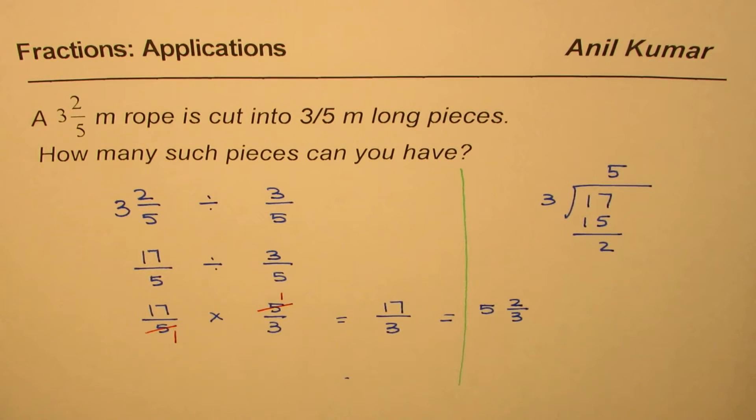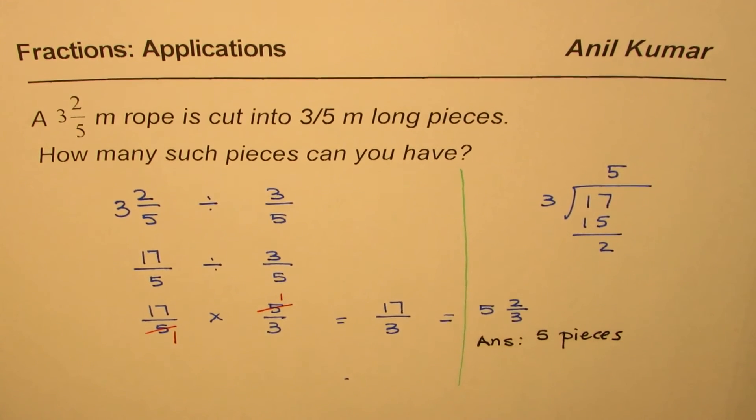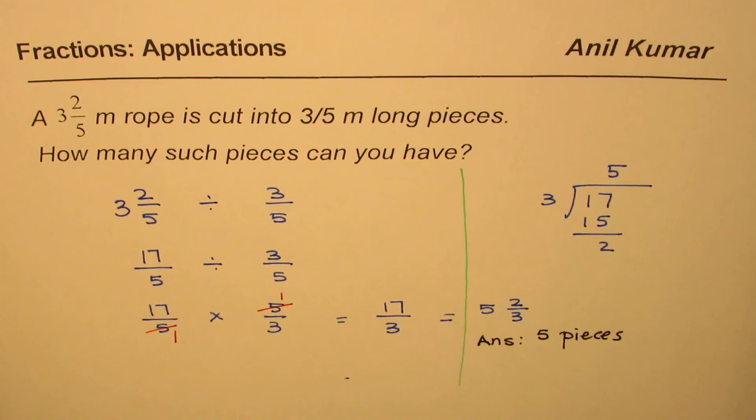Our answer is 5 pieces, correct? So we get an answer which is, we'll get 5 such pieces. That is less than the 5th piece, so that's not a full piece. So we'll get 5 such pieces from 3 2/5.